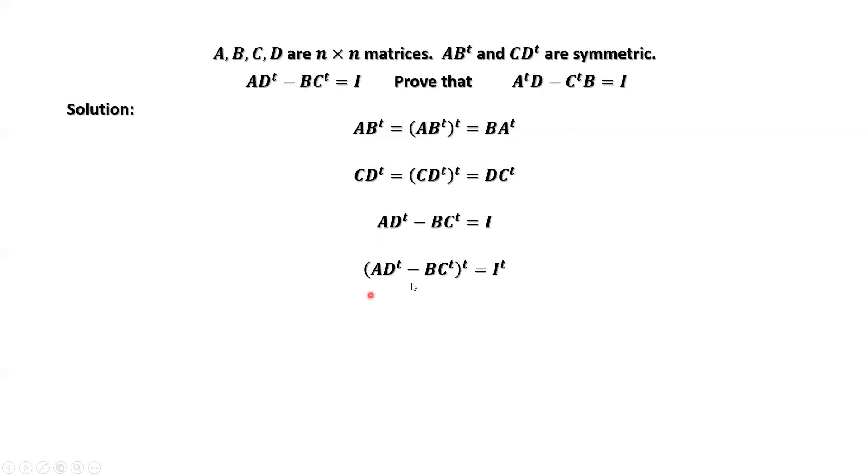We take transposes on both sides of this equation. Then we have D times A transpose minus C times B transpose equals I. We simplify all four results and move and restructure these four results that we have.